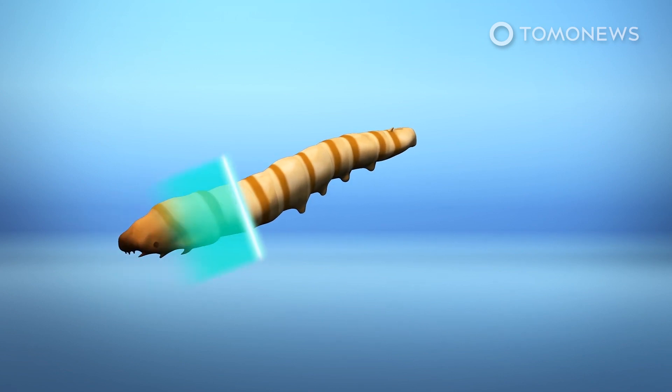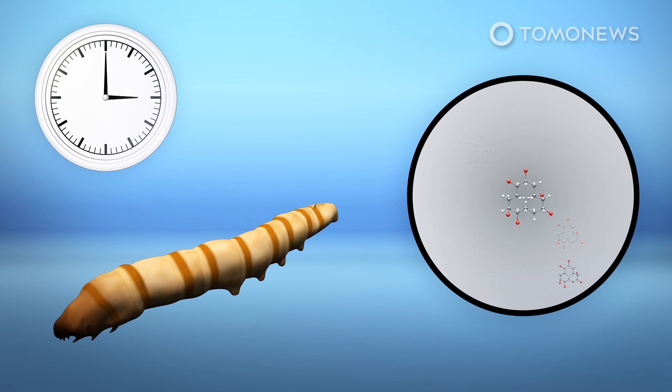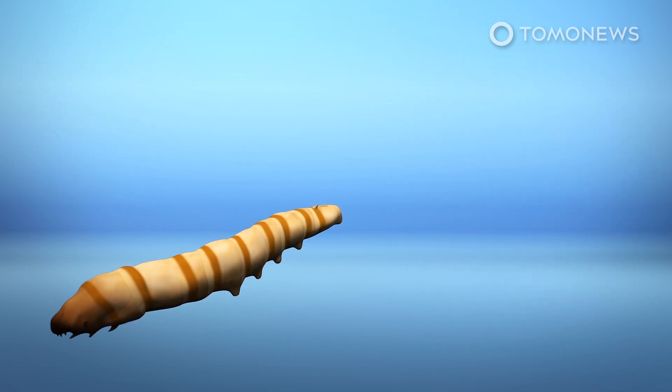Mealworms in the experiment were able to excrete 90% of the HBCD they ingested 24 hours after eating the plastic and expel the remaining 10% within 48 hours. This means the mealworms are uncontaminated even if they subsisted on styrofoam.